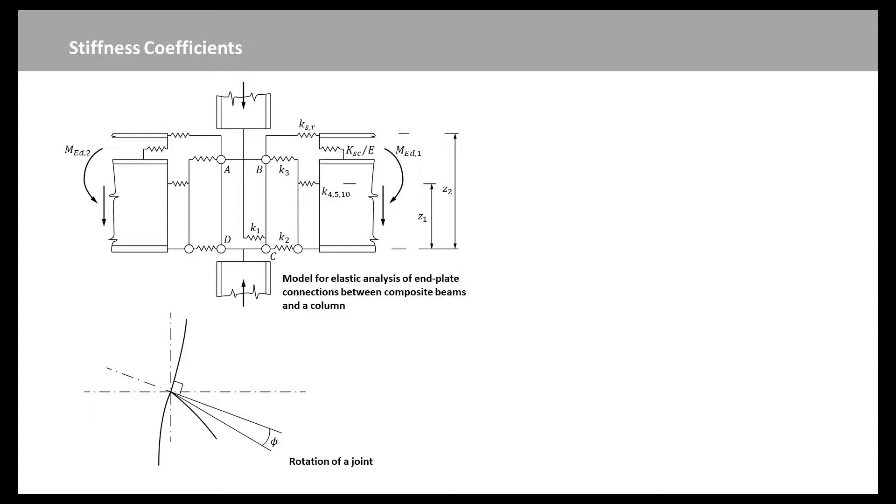The elasticity of their components is represented by springs with stiffness coefficients shown here. K1 is shear deformation of the column web panel, A, B, C, D. K2 is compression of the web of the column and of encasement, if any, at the level of the bottom flange. K3 is extension of the web of the column. K4 is bending of the column flange caused by the tension in bolt group A. K5 is bending of the end plate caused by the tension in bolt group A. K10 is extension of bolt row A.